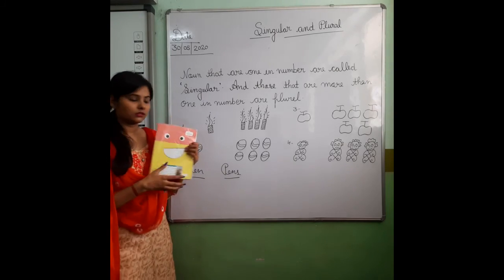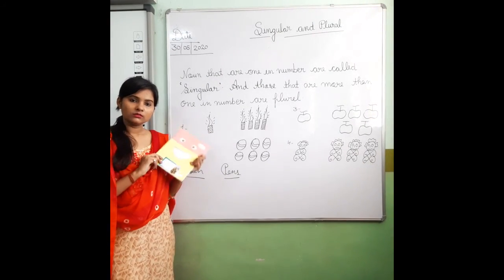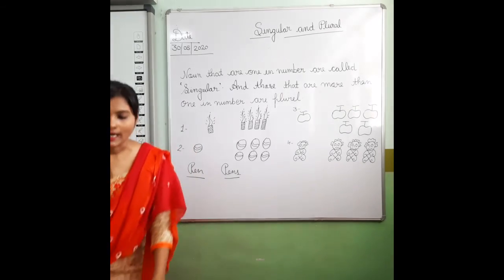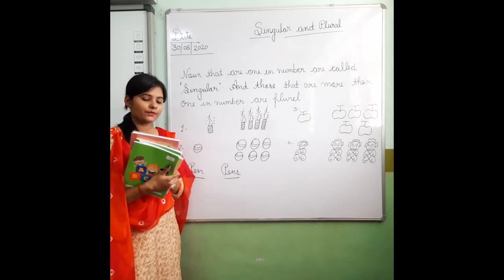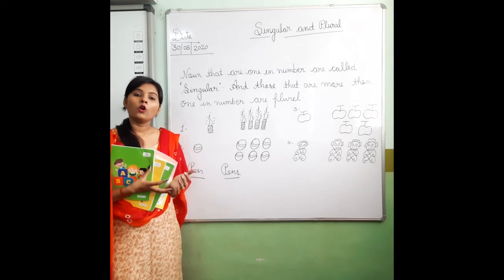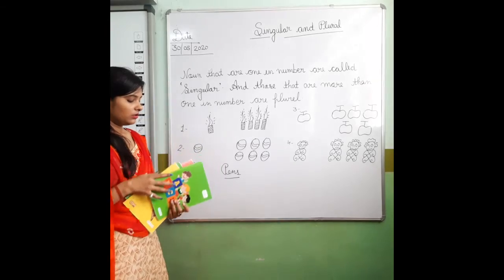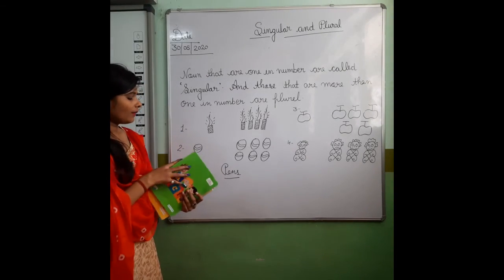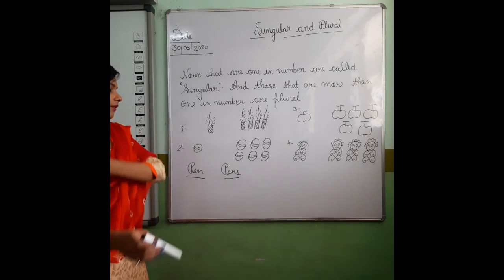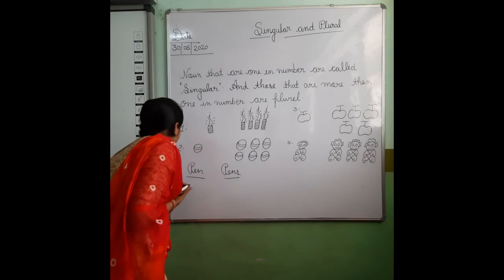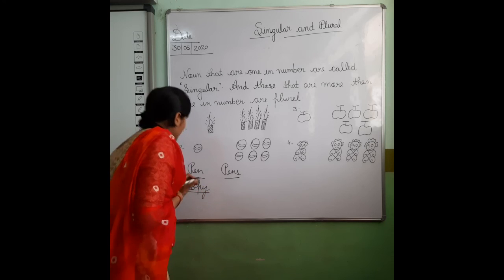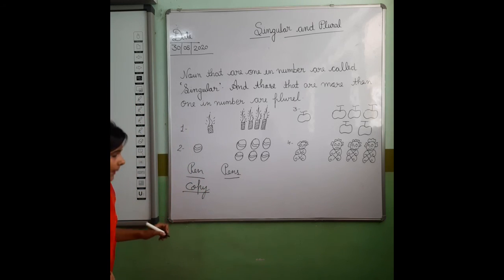Book. Count it — one book. I have taken only one copy. So one copy is singular — single copy.